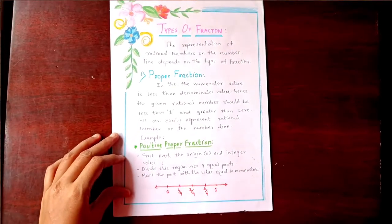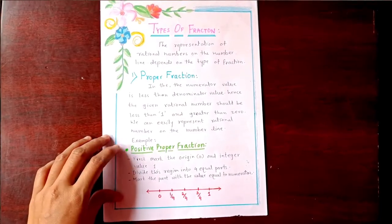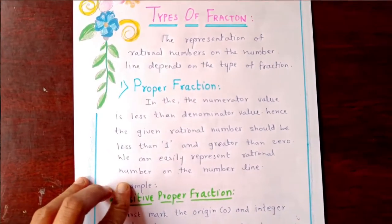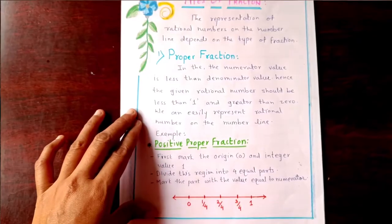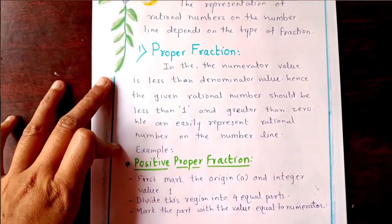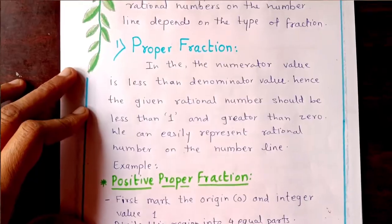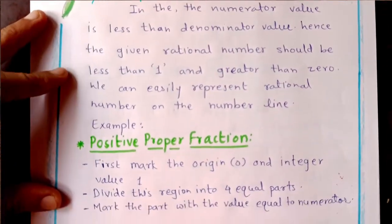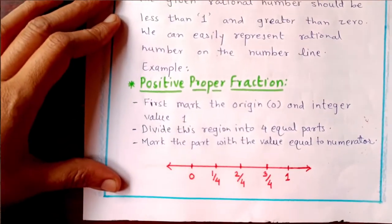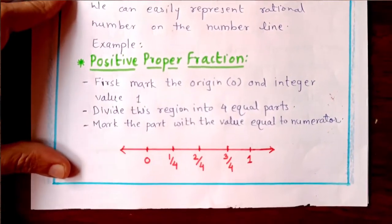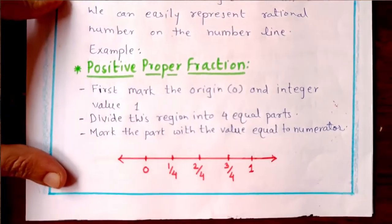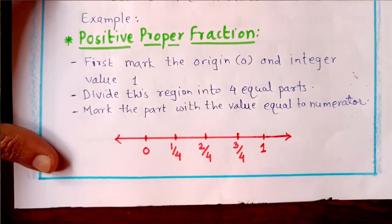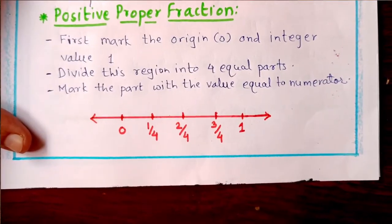The next page is types of fractions. The first one is proper fraction — representation of proper fraction on number line. Here is the description and here is the type of proper fraction, that is positive proper fraction on number line. Here is the example of the number line.